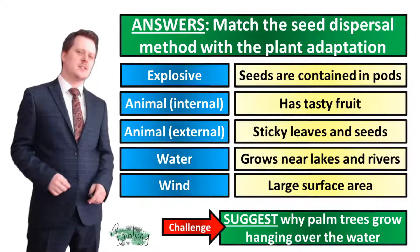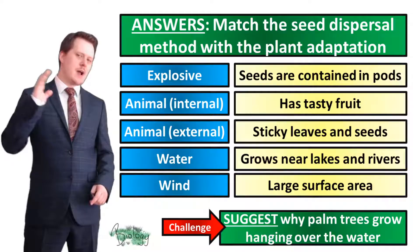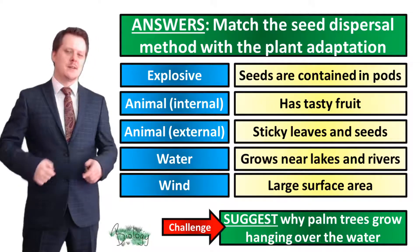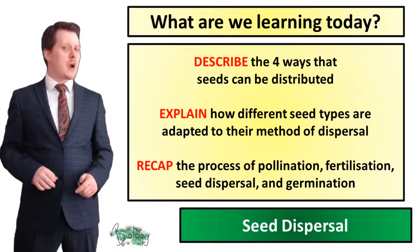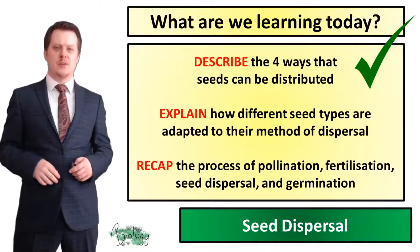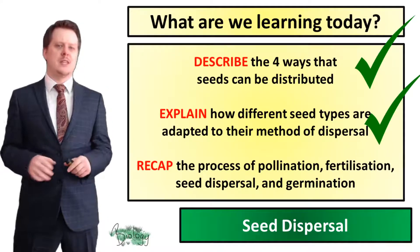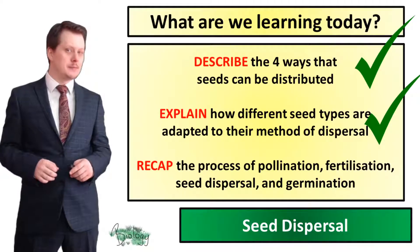Did you make any suggestions as to why palm trees grow hanging over the water? If you did, I'd like you to put it down in the comments below. So now we've described the four ways in which seeds can be distributed and we've explained how different seeds are adapted to their method of dispersal.